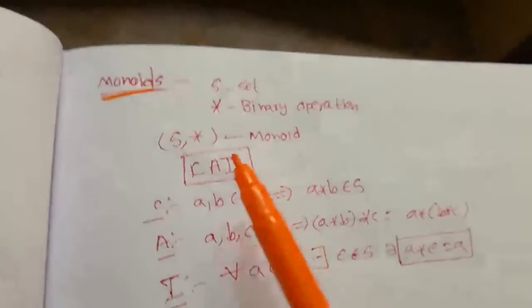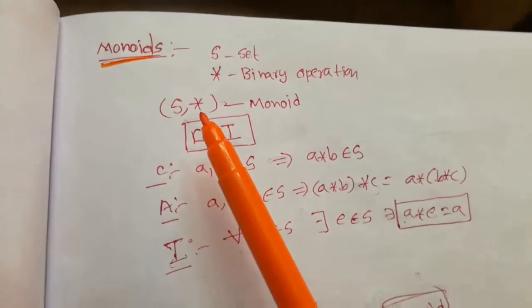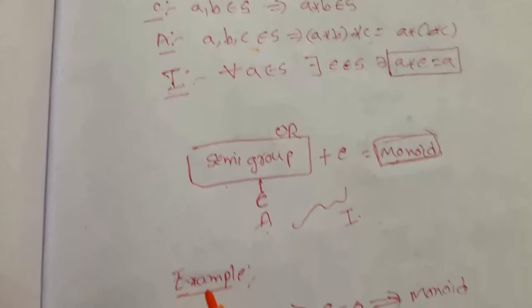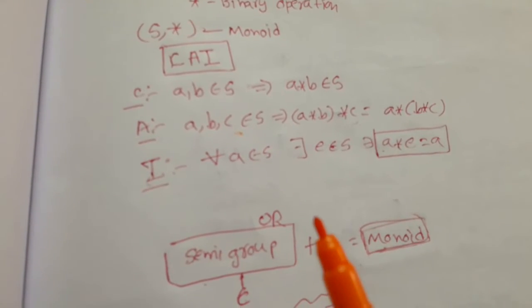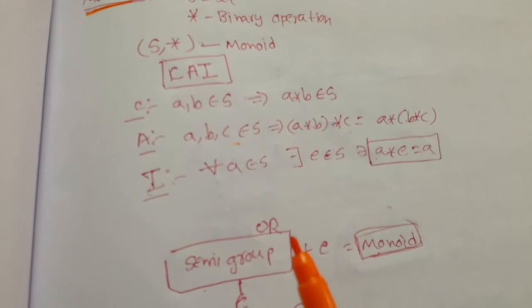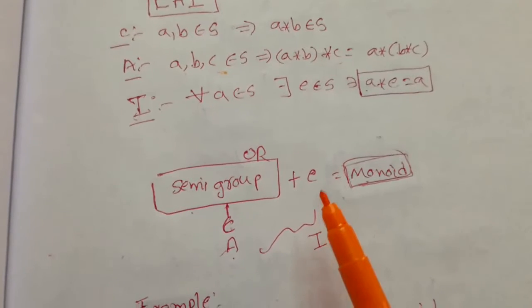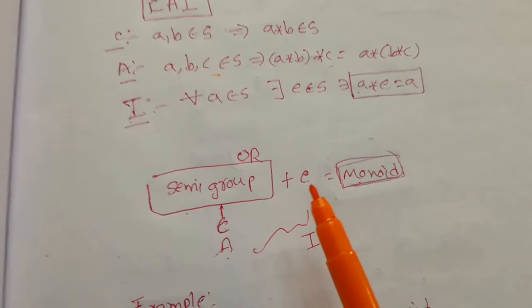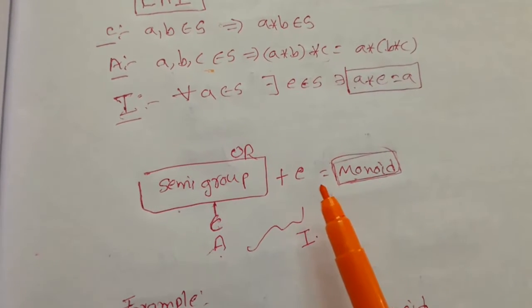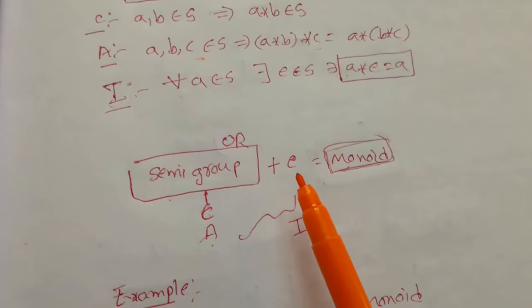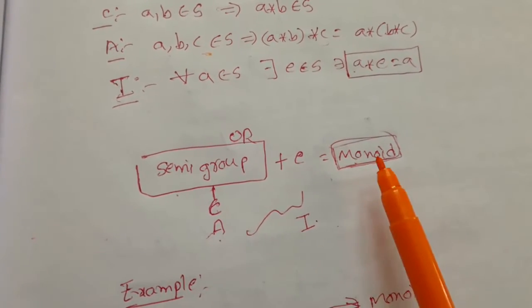If these three properties are satisfied, then S is called a Monoid under the binary operation star. Another definition of Monoid is a semi-group which has identity element E is called Monoid. That means if the identity element E exists in a semi-group, then that semi-group is called Monoid.